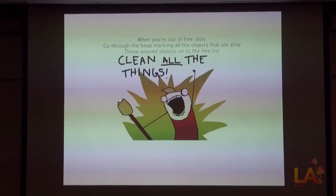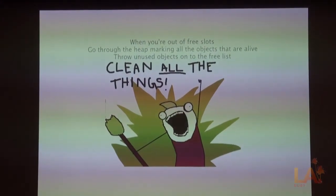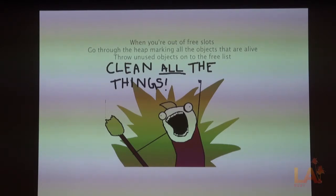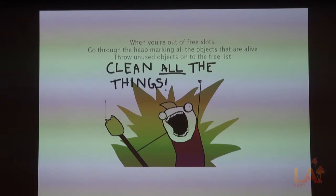When you're out of free slots on that list, it goes through the heap and does garbage collection. It marks — using a recursive algorithm — which objects are still alive and currently being used, then marks those. The ones that aren't marked are called dead, and it throws those unused objects back onto the free list. That's how it repopulates the free list. When the list runs out, it scans your entire heap, marks everything that's live, and pushes the dead stuff back onto the list. This is called the mark and sweep algorithm — it cleans all the things.